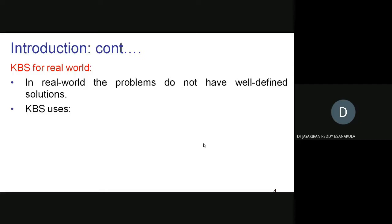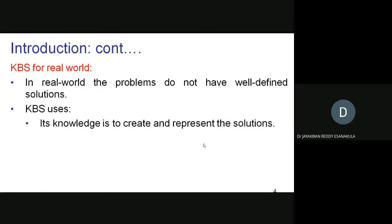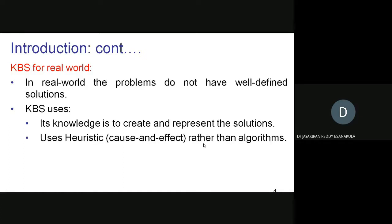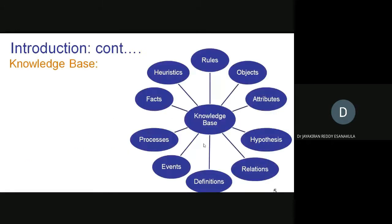A knowledge-based system uses its knowledge to create and represent solutions, and it uses heuristic cause-and-effect rather than algorithms, and it uses the knowledge base. The knowledge base is just like a database, but it contains many things: rules, objects, attributes, hypothesis, relations, definitions, events, processes, facts, heuristics, and more.